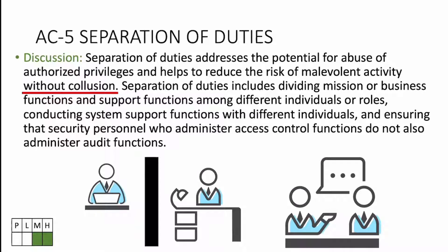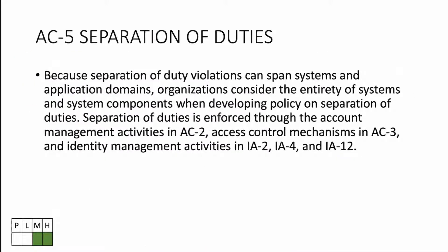The discussion references 'without collusion,' meaning two people — the system administrator and the auditor — could still get together and do nefarious things. AC-5 reduces the risk of malevolent activity without collusion, but collusion still exists as a risk. That's why we layer our defenses to protect against it as well.